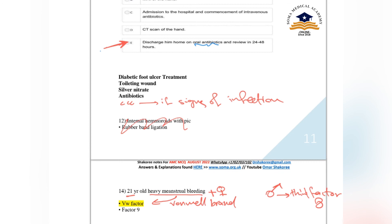The same principle applies to diabetic patients: if the diabetic patient presents with signs of infection but no systemic inflammatory symptoms, just give oral antibiotics.